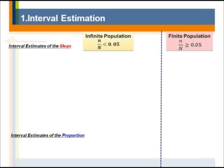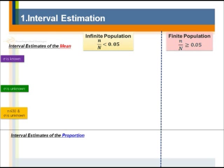We also need to distinguish questions about the mean versus the proportion — the proportion is sometimes about a percentage. When we know the population standard deviation (sigma is known), the interval estimation is the sample mean plus and minus the z-score times the standard error. Note: this is the standard error, not the standard deviation. The standard error comes from the population standard deviation divided by the square root of the sample size.